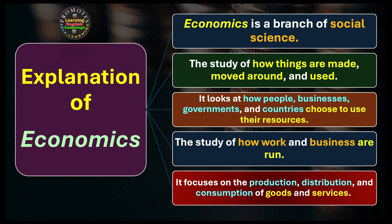Economics focuses on the production, distribution, and consumption of goods and services. Production refers to how things are made, created, and manufactured. After they are produced, distribution covers how they should be marketed and brought to the people. Consumption refers to how goods are used by the people — in what way, in what quantity, and at what pace.